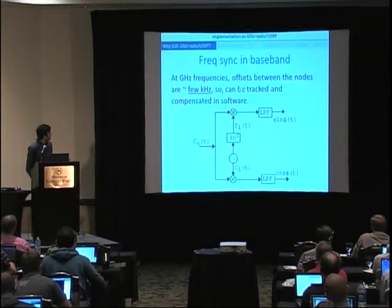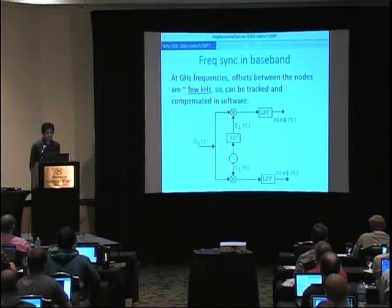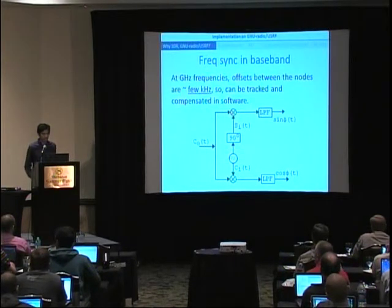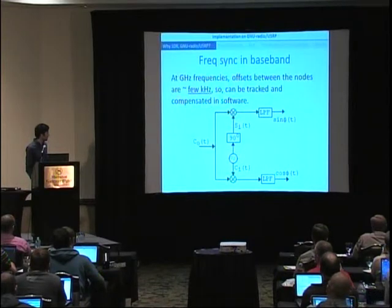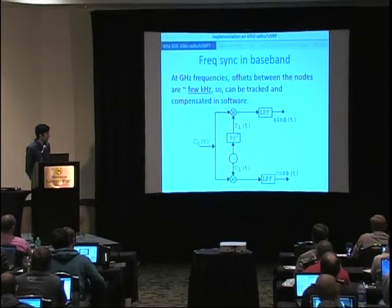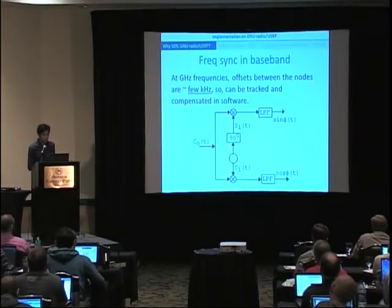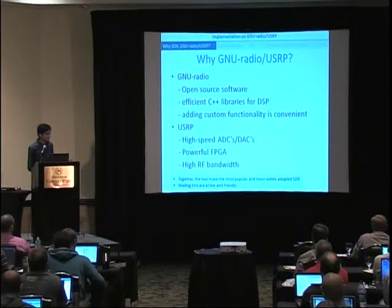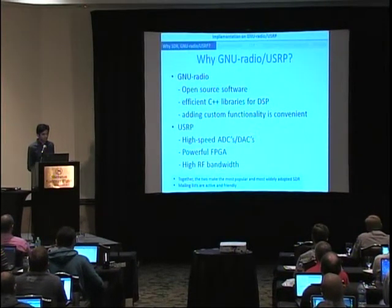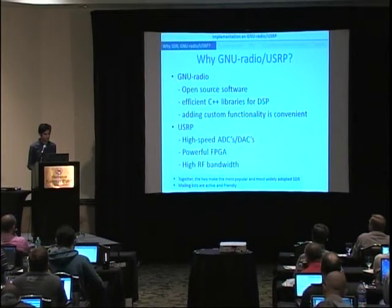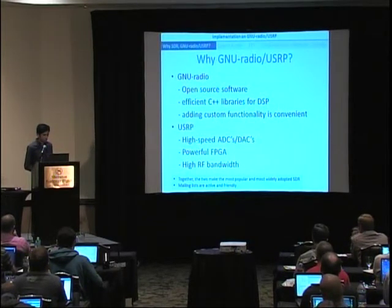The motivation for using software-defined radio is that transmitters operating at gigahertz frequencies cannot be directly digitized. However, if one transmitter sends a signal and another receives it, after demodulation what remains is the phase offset. Even at gigahertz carrier frequencies, the relative phase offset between two transmitters is on the order of a few kilohertz, so it can be tracked and compensated in software. We use GNU Radio and specifically the USRP platform because GNU Radio is open source, the USRP has good properties, and the mailing lists are friendly and active.